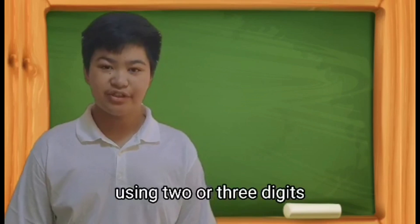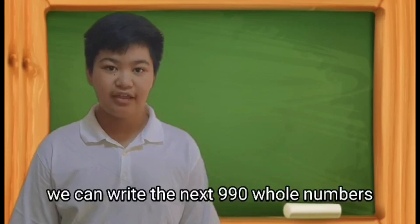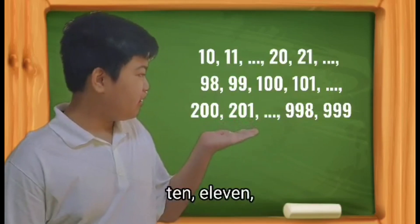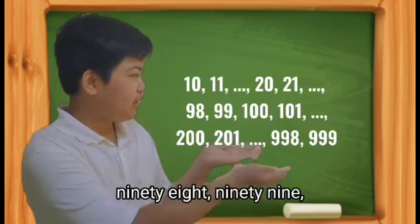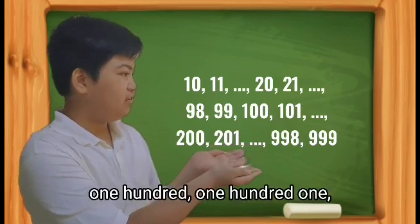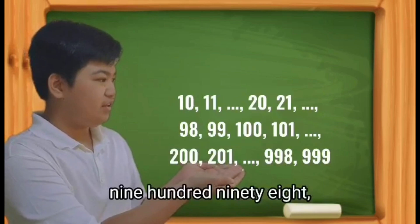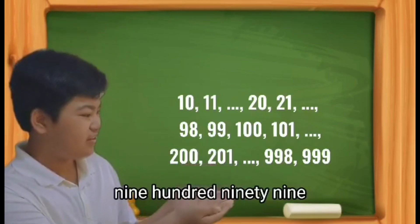Using 2 or 3 digits, we can write the next 990 whole numbers: 10, 11, 20, 21, 98, 99, 100, 101, 200, 201, 998, 999.